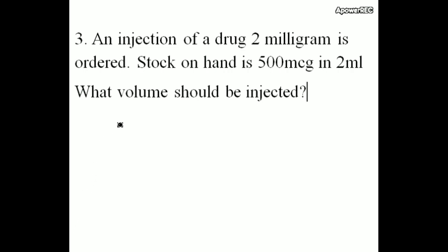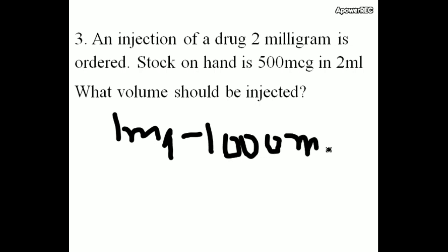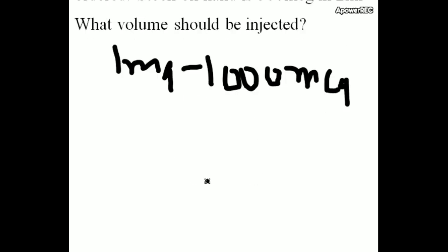Here you should understand. 1 mg is equal to 1000 microgram. Don't forget. 1 mg is equal to 1000 microgram. So 2 mg is equal to 2000 microgram.